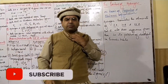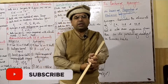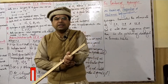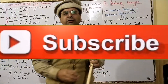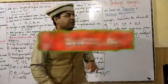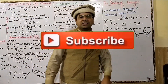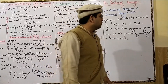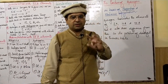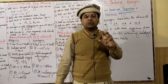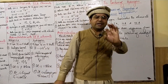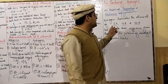Assalamu alaikum, I am Usman Ali, assistant professor of chemistry, and today we are going to conclude chapter number one FSc second year. The last article is about the position of hydrogen in the periodic table. As we know, hydrogen contains one electron in its valence shell — 1s¹ — due to its electronic configuration, and due to its properties, it can resemble three different groups.